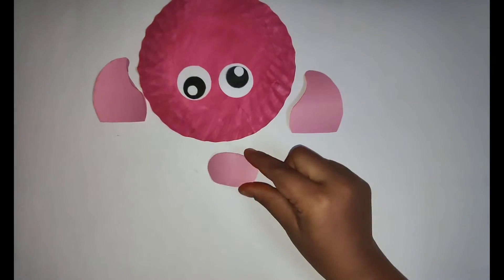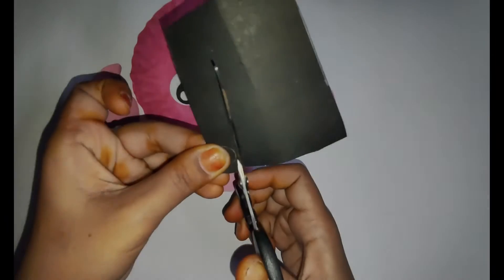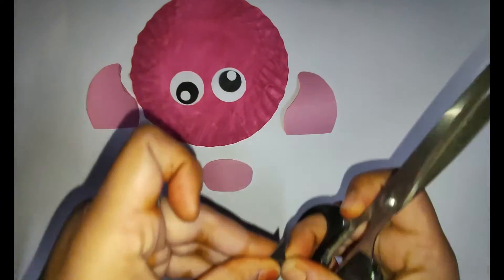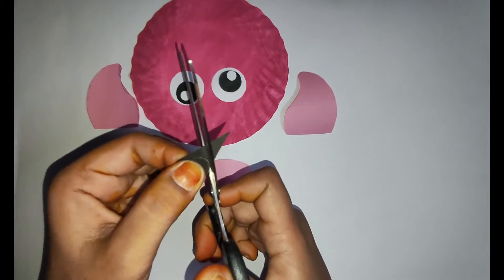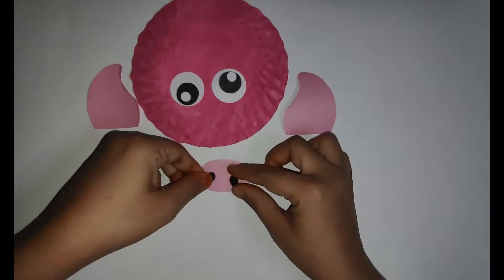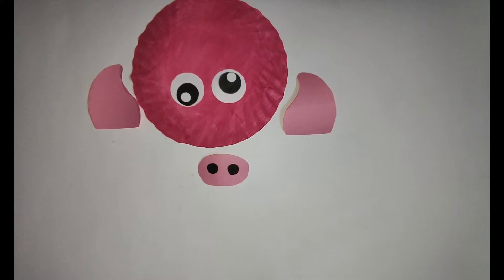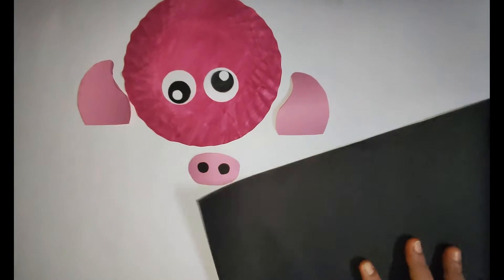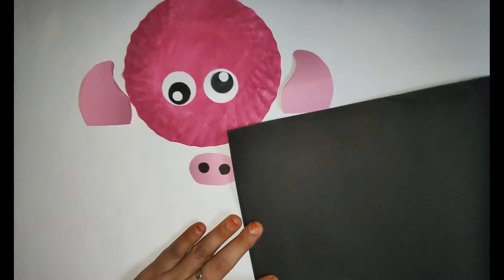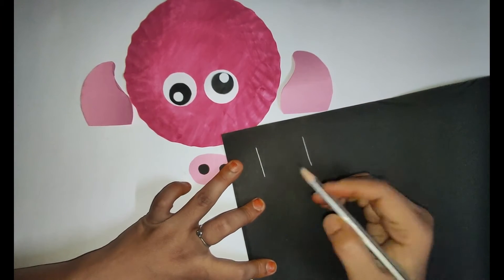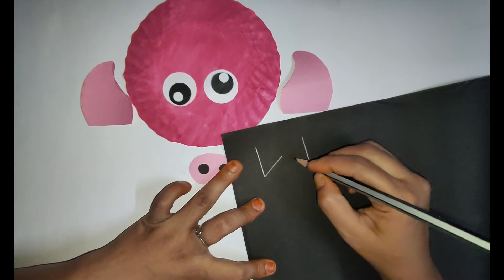So that will be the nose. Two small circles to place inside the nose for the holes. And we'll take the black color chart paper and draw the legs of the pig and cut it.